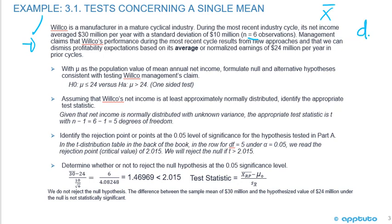From that, we're going to be able to calculate our degrees of freedom, which is n minus one, and that's going to equal five. Management claims that Wilco's performance during the most recent cycle results from new approaches, and that we can dismiss the probability expectations based on its average or normalized earnings of $24 million in prior cycles. So that becomes your mu equals 24 because it's talking about another average.